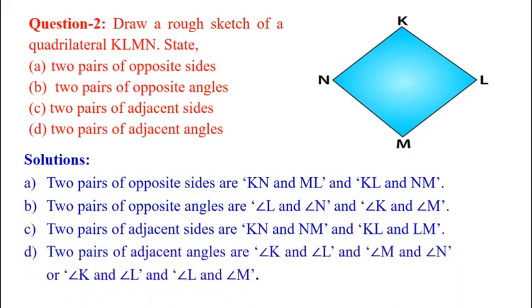Two pairs of adjacent angles are angle K and angle L, angle M and angle N, or angle K and angle L, and angle L and angle M.